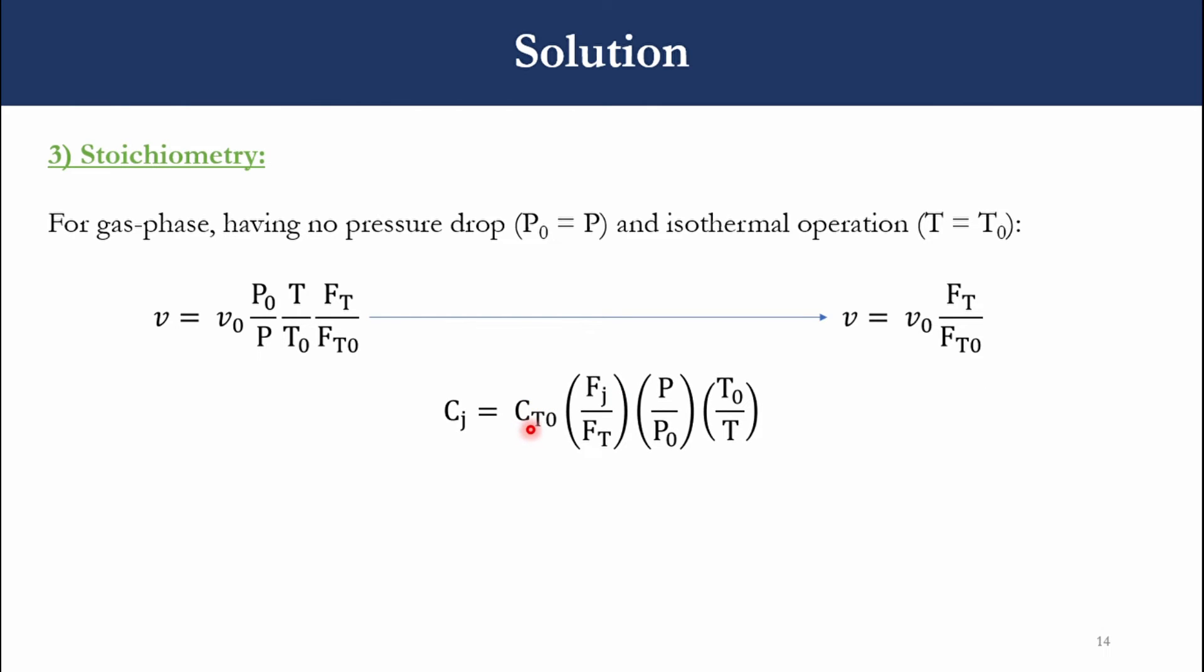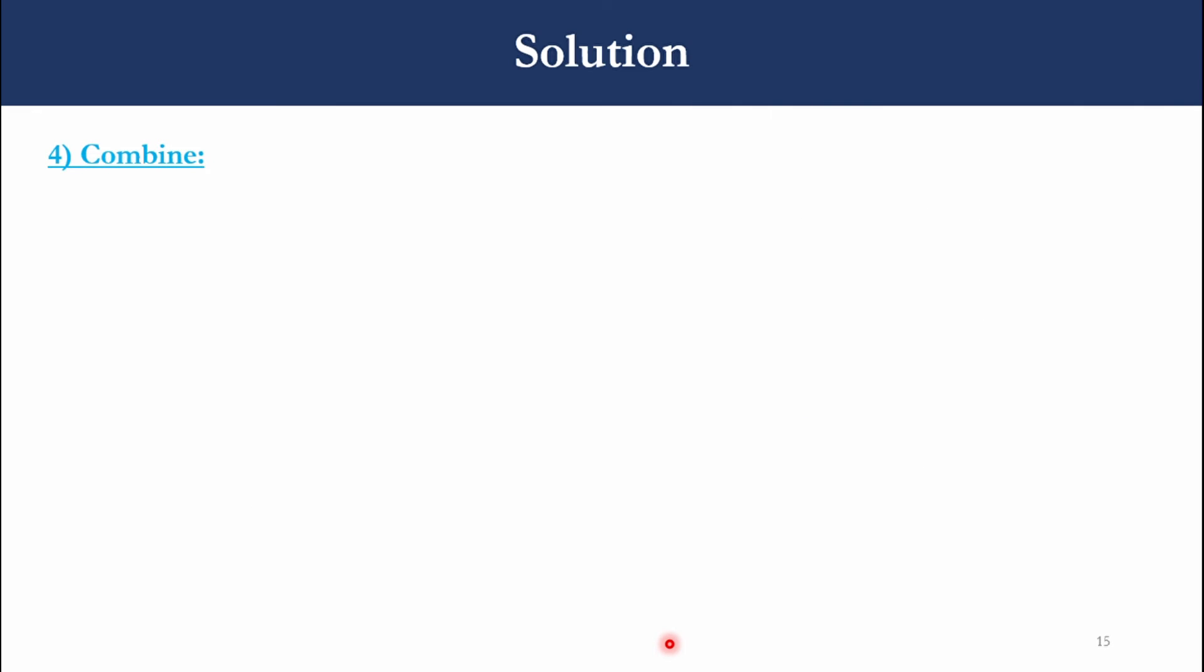Accordingly, C of J equals CT0 times F of J over FT times P over P0 times T0 over T. For species A, since P over P0 and T0 over T terms are gone, we get CA equals CT0 times FA over FT. For B, CB equals CT0 times FB over FT. For C, C of C equals CT0 times FC over FT. In this way, the concentration terms can be generated for all species. And finally, the total flow rate is FA plus FB plus FC.